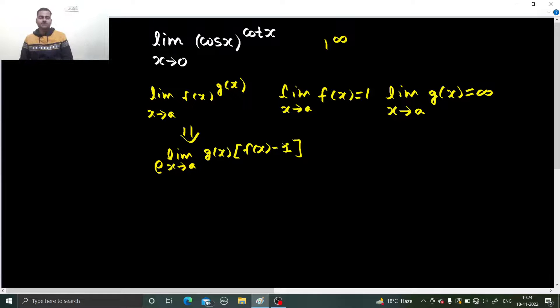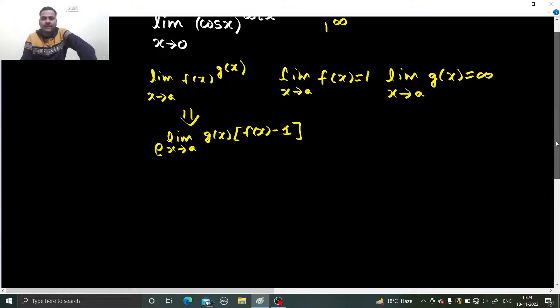Now, because think one step ahead in this question, because we are going to subtract 1 from the base, base here is cos x, so why not have a 1 in the beginning only. So to have 1 in the beginning, what we will do is add 1 and subtract 1. So limit x tending to 0, this cos x I am writing as 1 plus cos x minus 1, power cot x.